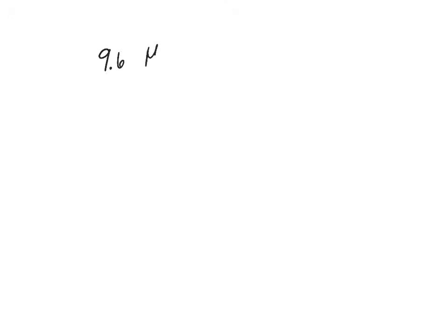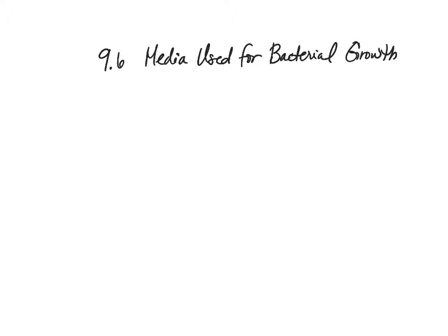Here in chapter 9.6, we are going to be talking about media used for bacterial growth. We've been discussing culturing organisms throughout the chapters — growing them on agar, in a broth, in a test tube or agar plate, depending on the application. Now we're going to look at specifics regarding the different types of agar plates and broths that can be used for culturing organisms.